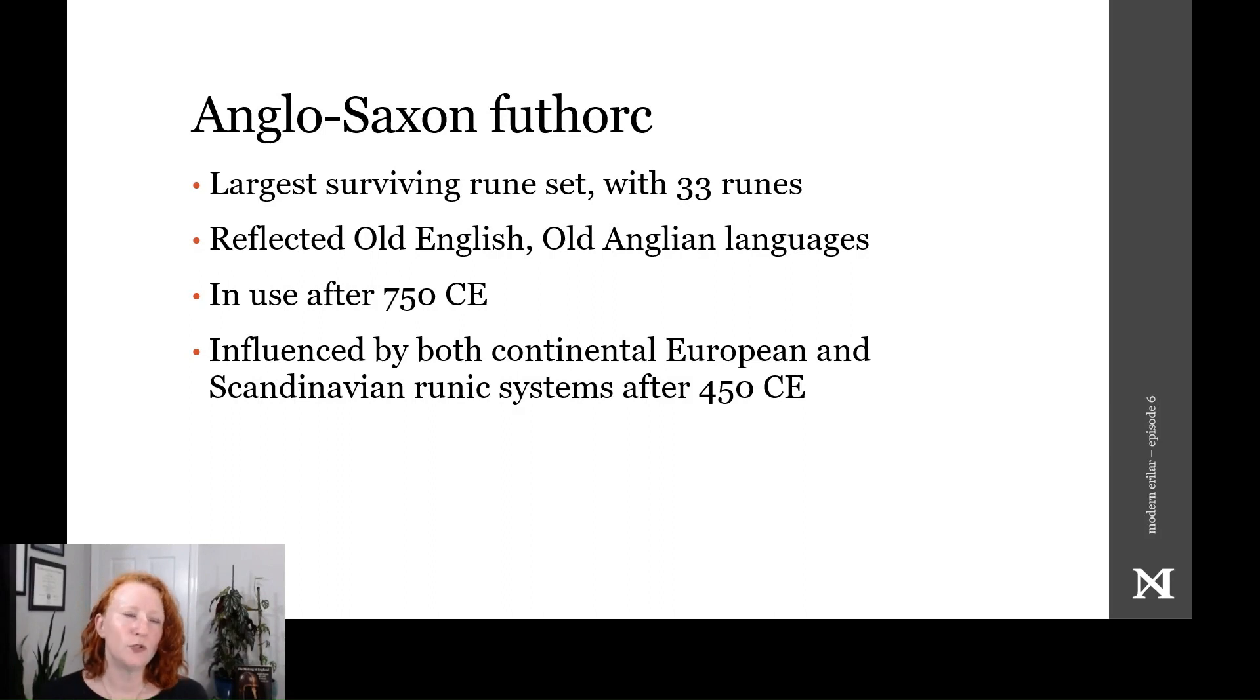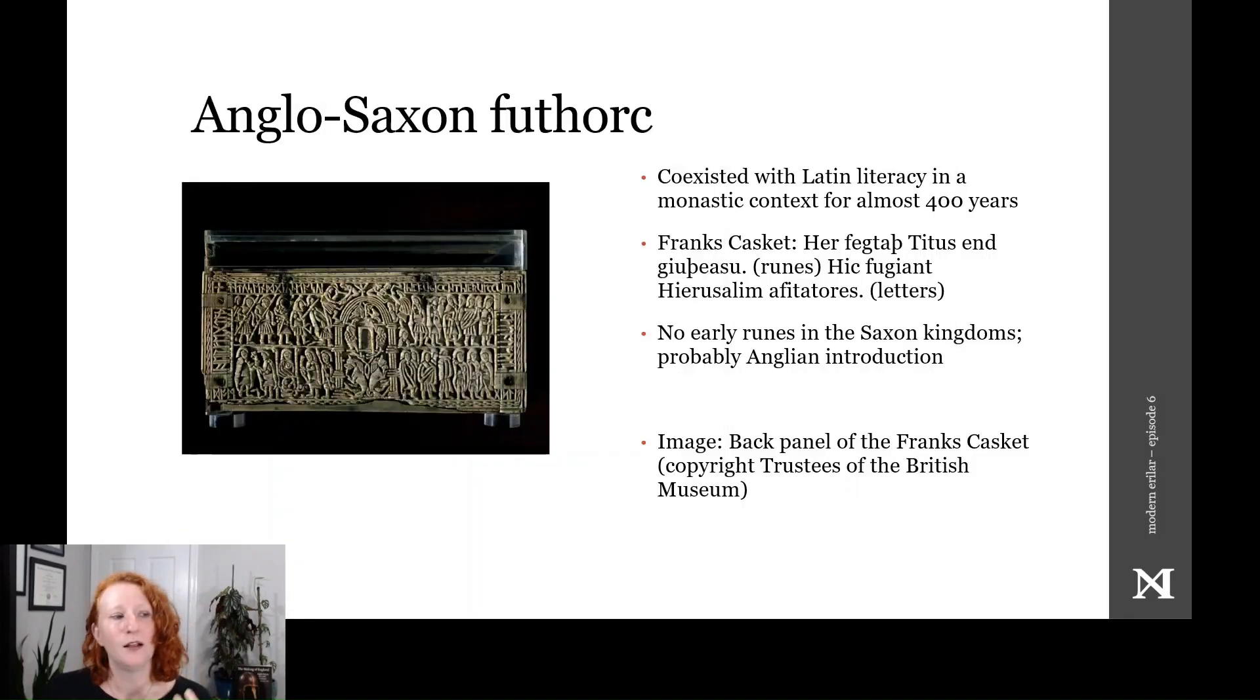To put this evolution into wider context, after the Bracteate period, continental runes diverged from Scandinavian developments and fossilized, developing only conservatively while Scandinavian runes continued to evolve. Scandinavian and continental developments both influenced English runes after about 450. The runic system in England experienced more innovation than that on the continent and expanded. This is different than what happened in Scandinavia, and it may be because of the close connection to Latin scriptoria as seen in ecclesiastical runic monuments and the abundant use of runes in manuscripts.